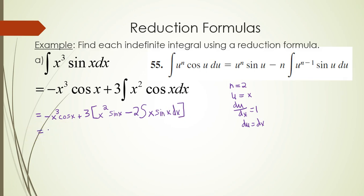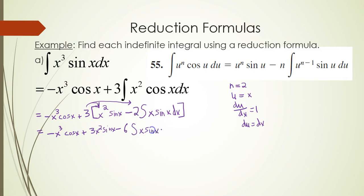We're almost there. I'm going to distribute that 3 into the brackets, which gives a 3x squared sine x minus 6 times the integral of x sine x dx. We now know two groupings that will be in our final answer, and we have one more integral to evaluate.